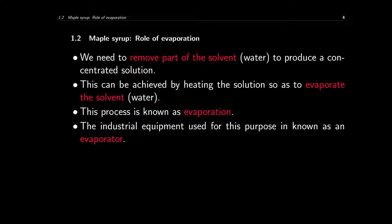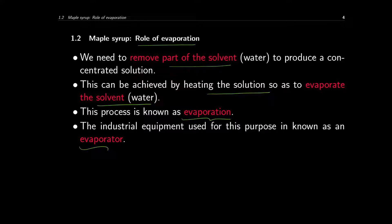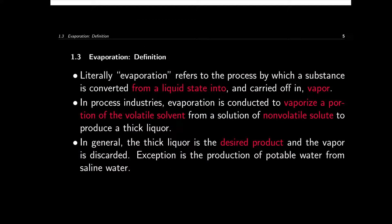The process through which water is removed from the sap is called evaporation. The role of evaporation in this maple syrup production process is to remove part of the solvent, which is water. This is done by heating the solution to evaporate the solvent — for this case, it's water. This process is known as evaporation, and the equipment used for evaporation is called the evaporator.